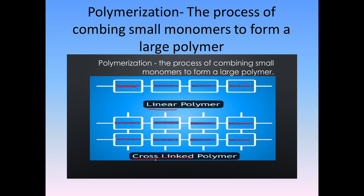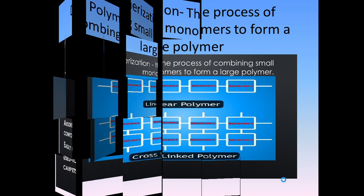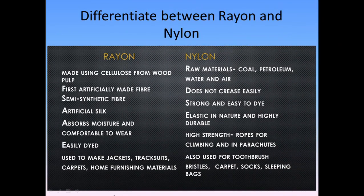A cross-linked polymer is when the monomers are cross-linked. You can see boxes that are crossed — there could be boxes everywhere, it could be even infinite. So that's cross-linked polymer.